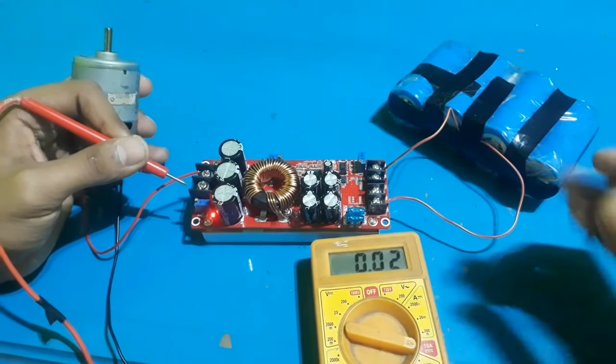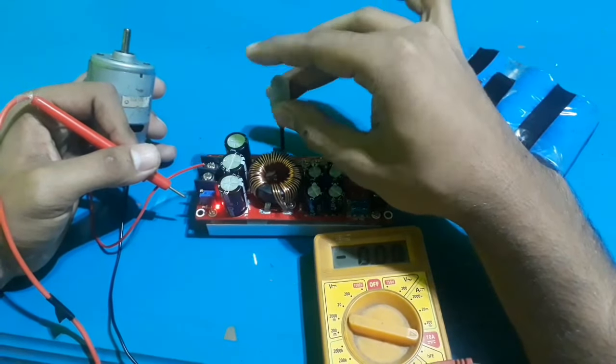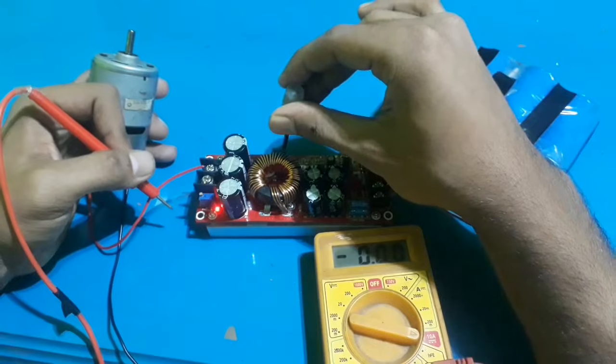The motor runs at maximum current at 20 volts. Now I'm rotating the rheostat anti-clockwise to decrease the output current.